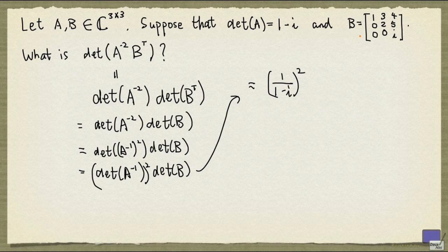The determinant of B is given by the product of the diagonal entries because this is an upper triangular matrix. So the determinant of B is 1 times 2 times i, and that's 2i.